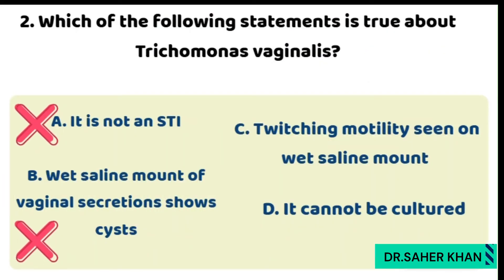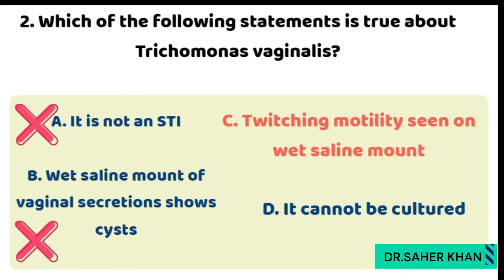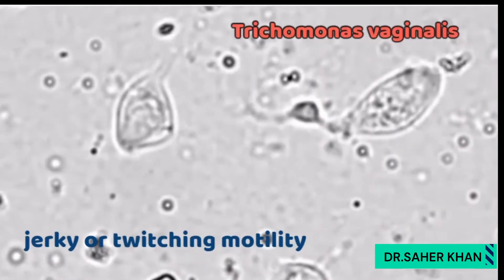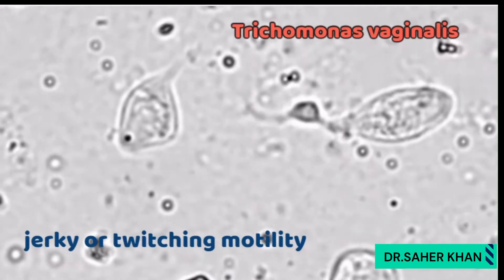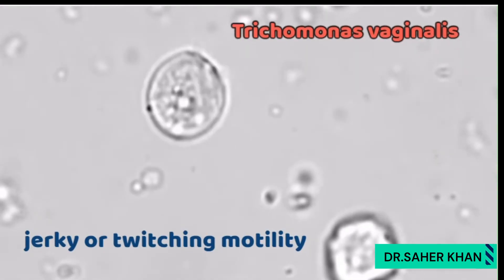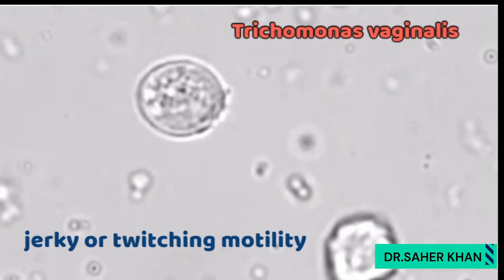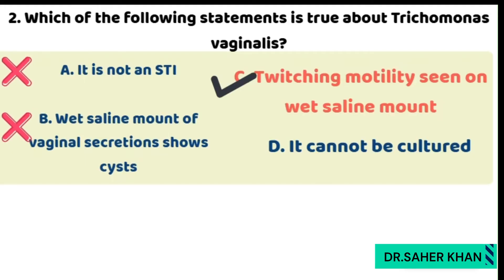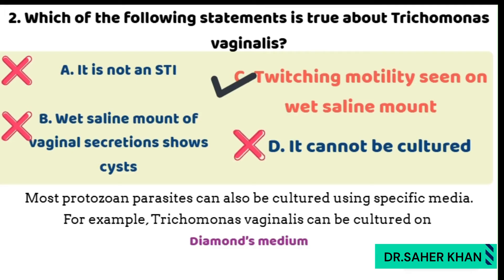Option 3 — twitching motility seen on wet saline mount — is absolutely correct. Trichomonas vaginalis belongs to the flagellate category, meaning it has flagella for movement, and on a wet mount it shows characteristic twitching or jerky motility, which is a key diagnostic feature. Option 4 — it cannot be cultured — is wrong. Many protozoan parasites can be cultured using specific media, and Trichomonas vaginalis can be cultured on Diamond's media. So option C is the correct answer.